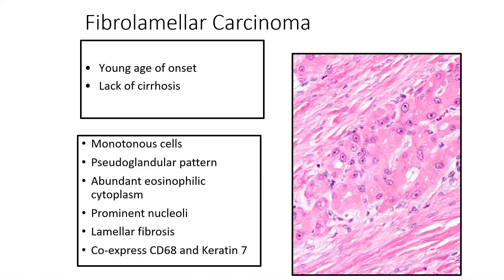Here's a quick summary slide. The co-expression of keratin-7 and CD68 is supposedly a feature of fibrolamellar carcinomas. That said, remember it is a surrogate marker — it works at times, but it is not consistent enough to be the defining feature of a fibrolamellar carcinoma.